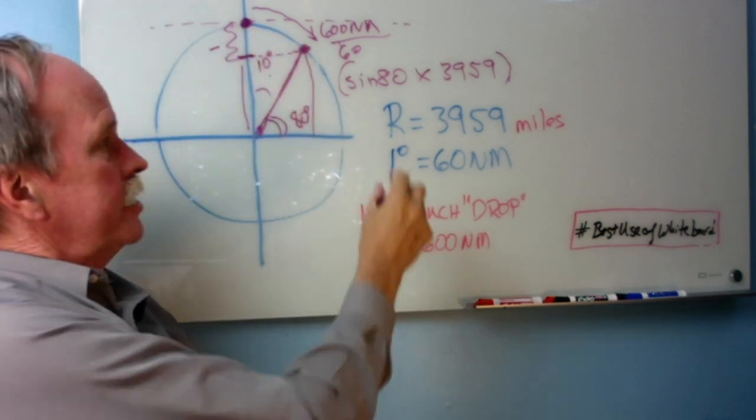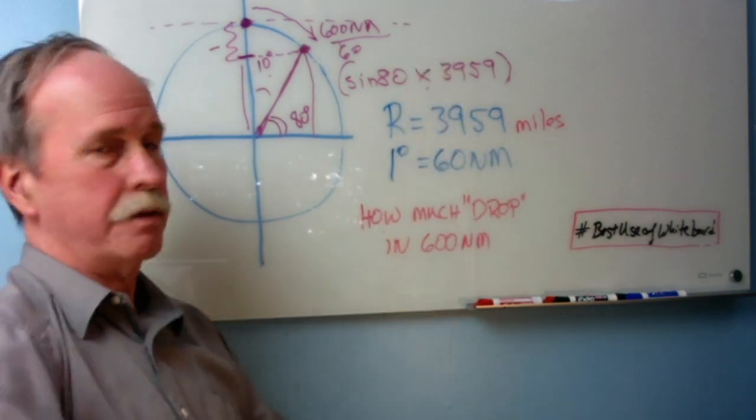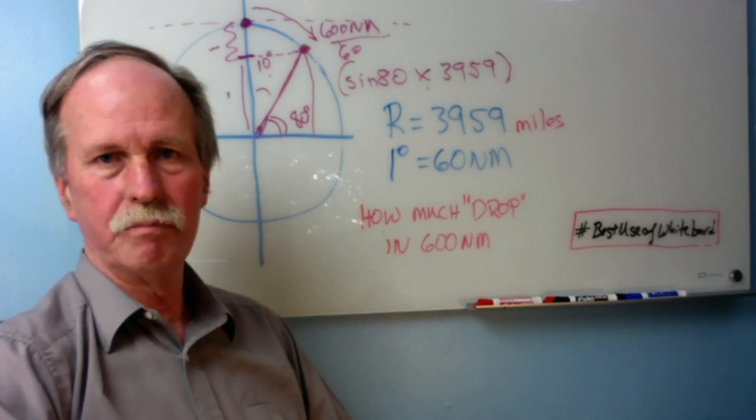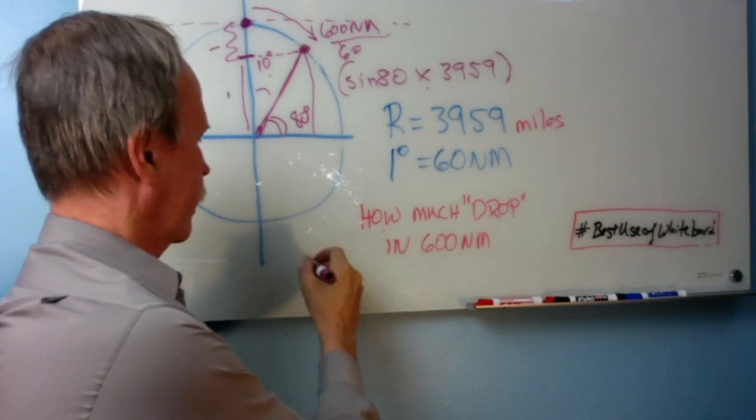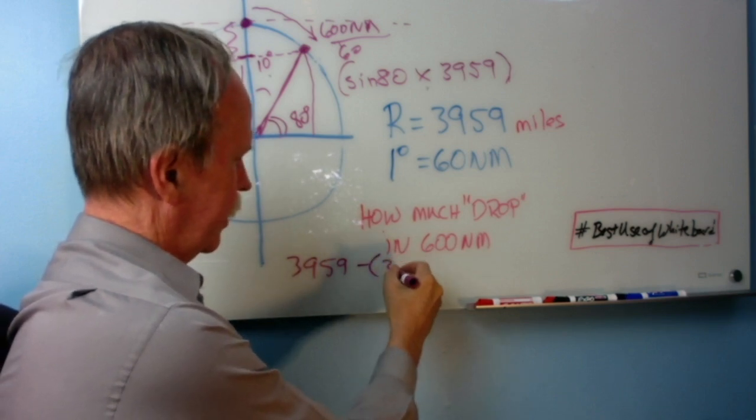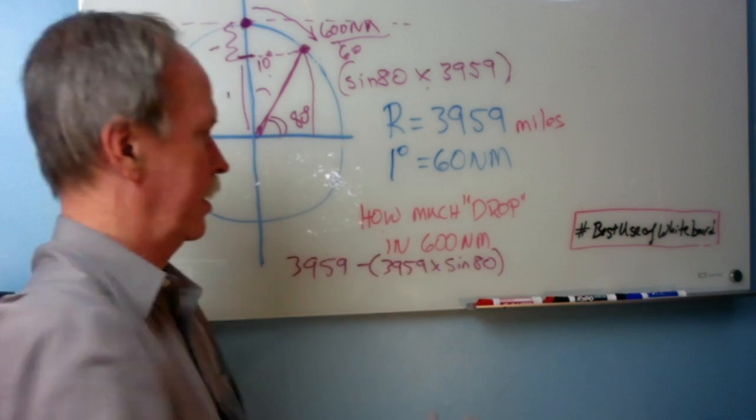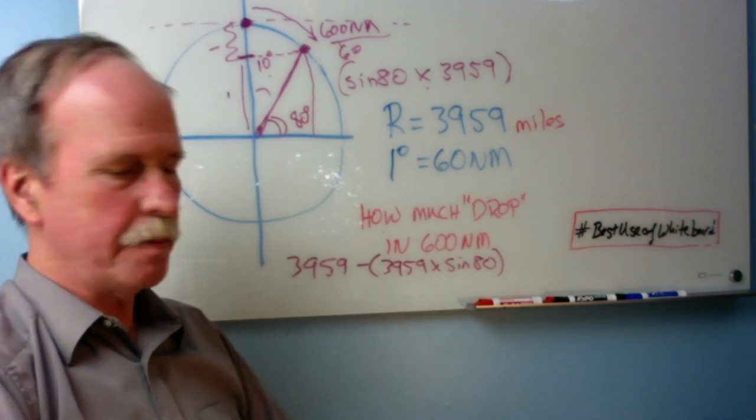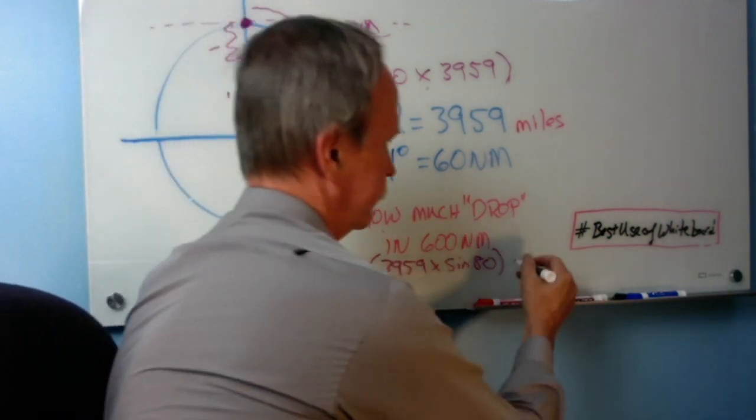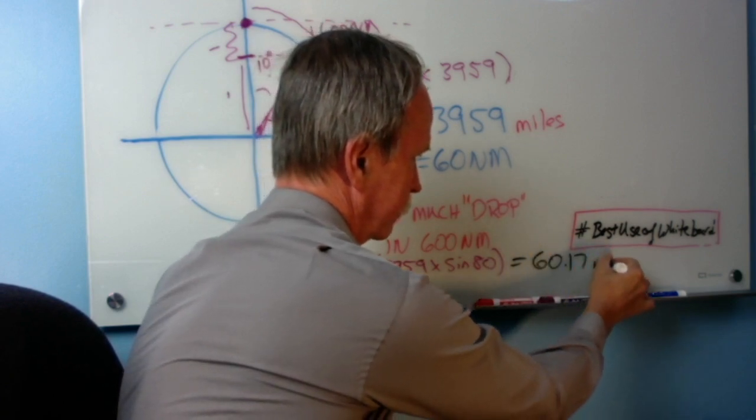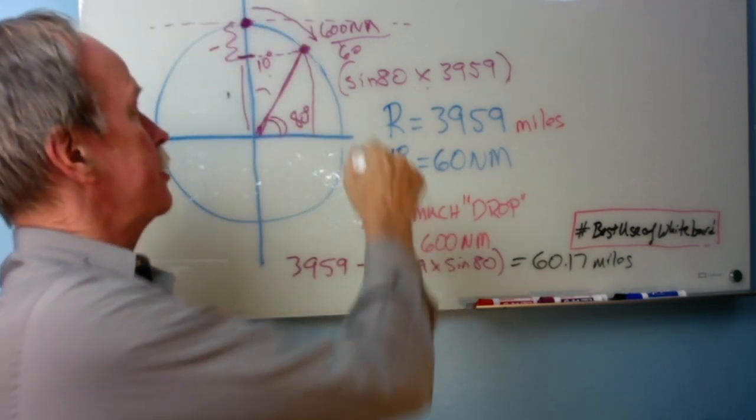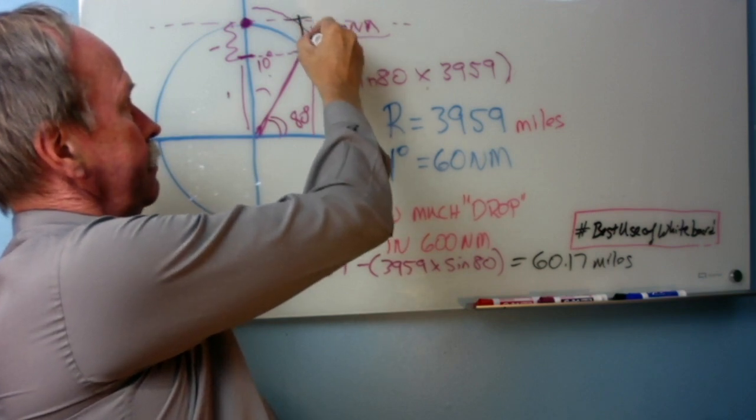So 3959, which is the radius of the Earth, minus 3959 times the sine of 80 degrees. How much does that come out to? Let's do the math. 60.17 miles. That is the drop from our horizontal down to that spot on the Earth.